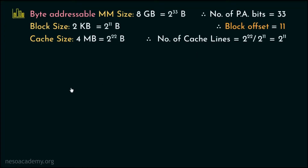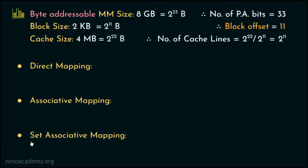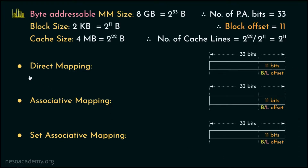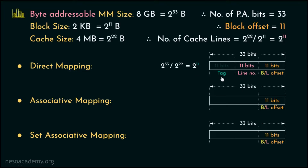Now let's observe what the physical address split will be in terms of direct, associative, and set associative mapping respectively. For the physical address we need 33 bits, and the block offset is 11 bits, which remains the same for all mapping techniques. For direct mapping, since there are 2 to the power 11 lines inside the cache, 11 bits are used for the line number portion. The number of tag bits can be found from the ratio between main memory and cache memory size, giving 2 to the power 11, meaning 11 tag bits.